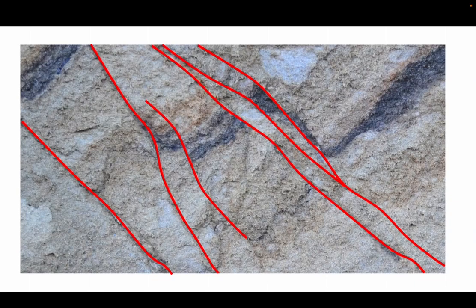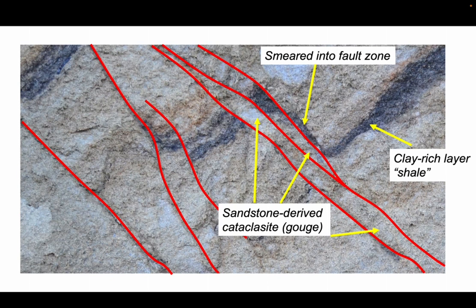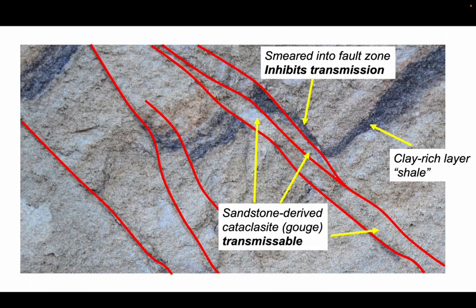Let's start by looking at an outcrop. There's a clay-rich layer in black that's been smeared into the fault zone, but other parts of the fault comprise gouges - those are cataclasites, broken rocks derived from the surrounding sandstones. So we've got two distinct types of fault rock in our fault zones. The importance is that for the gouge, in general we can assume these will transmit fluids very readily, they may even have enhanced transmissibility compared to the surrounding original sandstones, whereas the clay-rich layer will tend to inhibit transmission across the fault zone, decreasing its permeability.